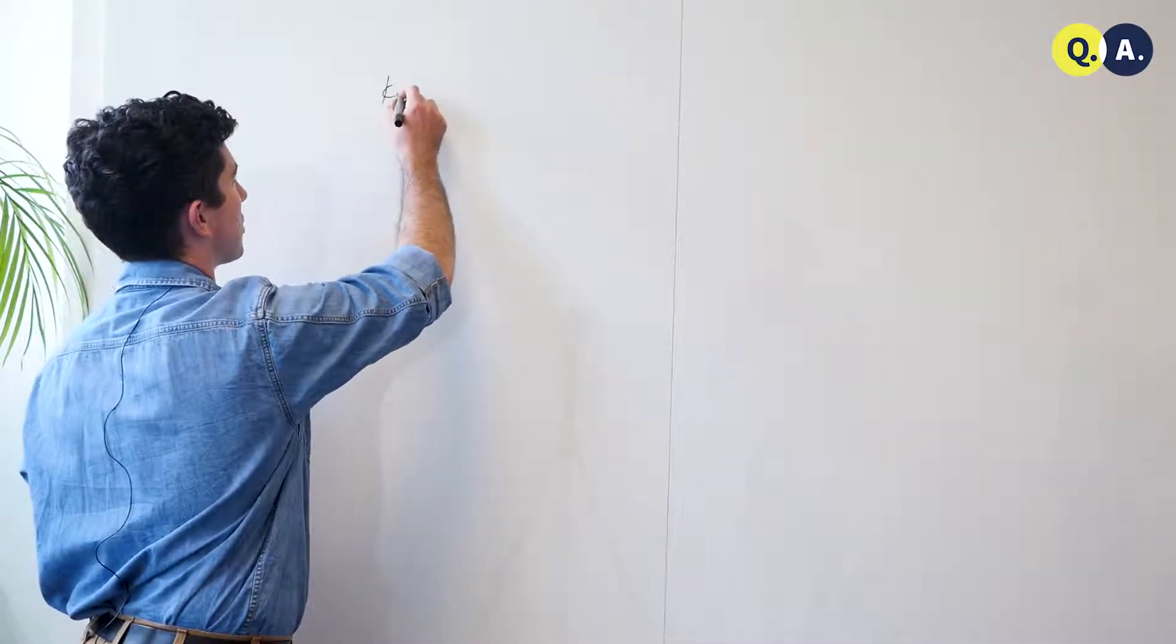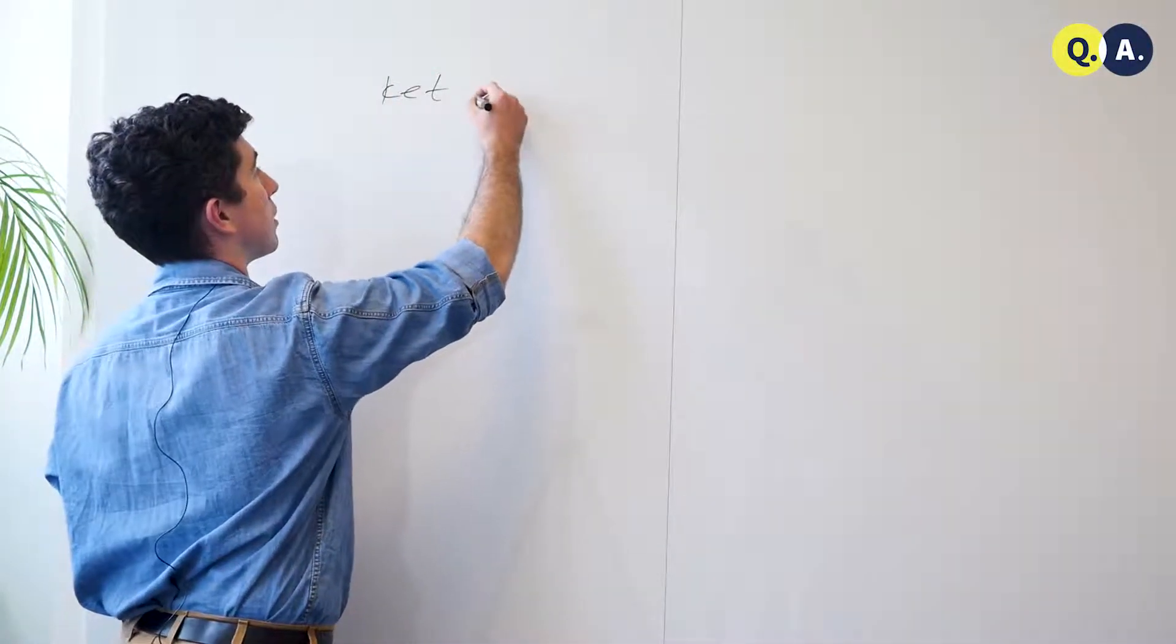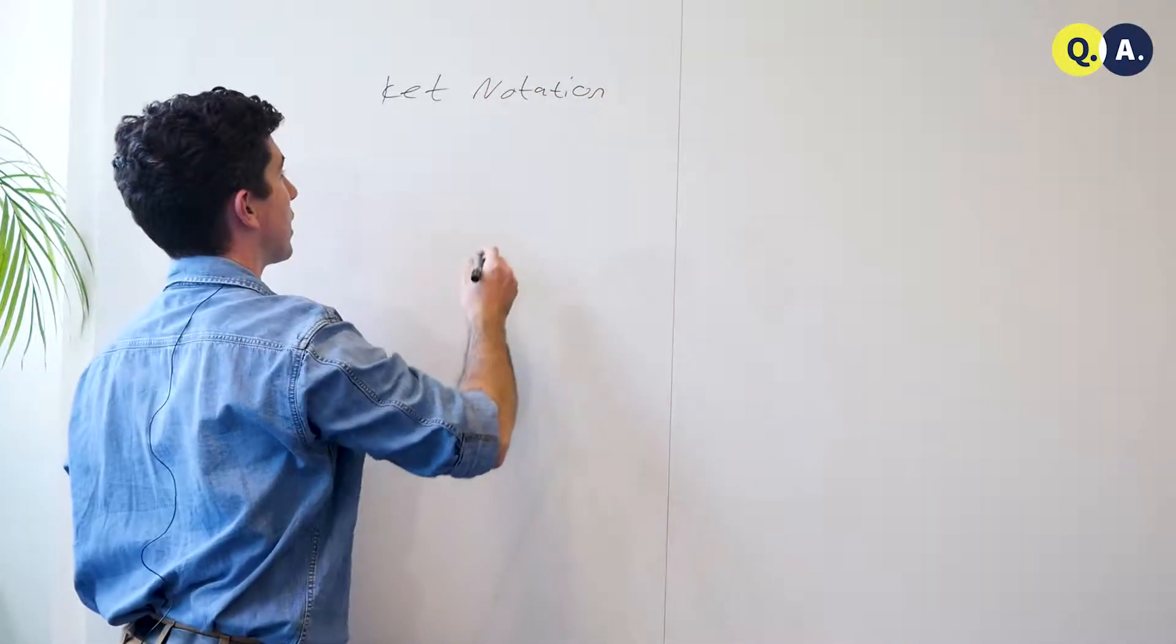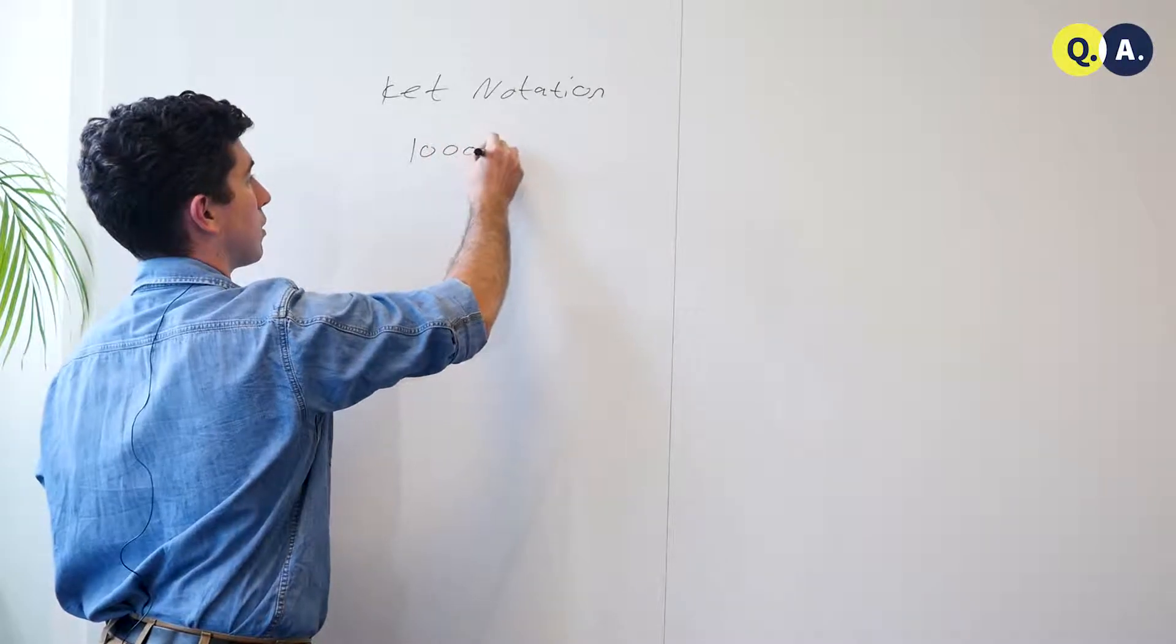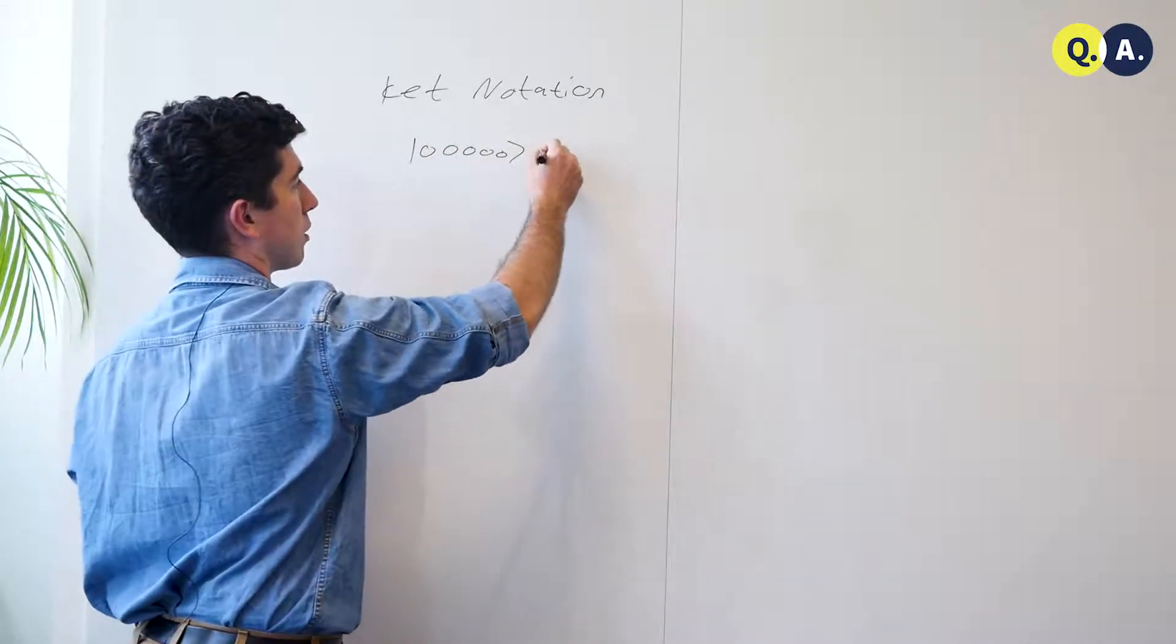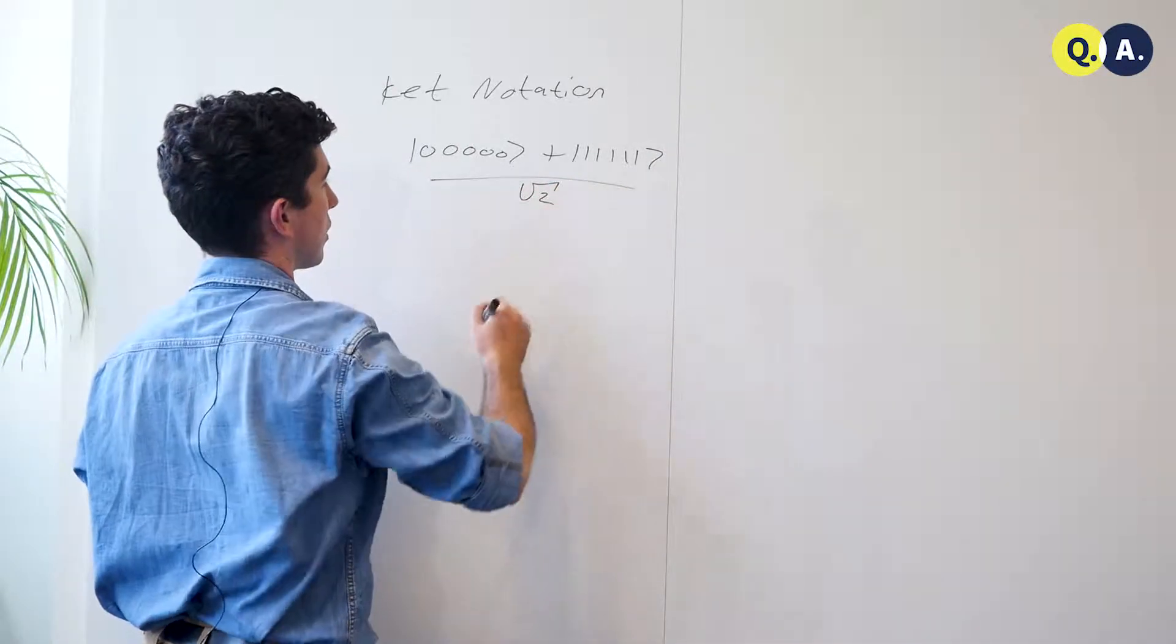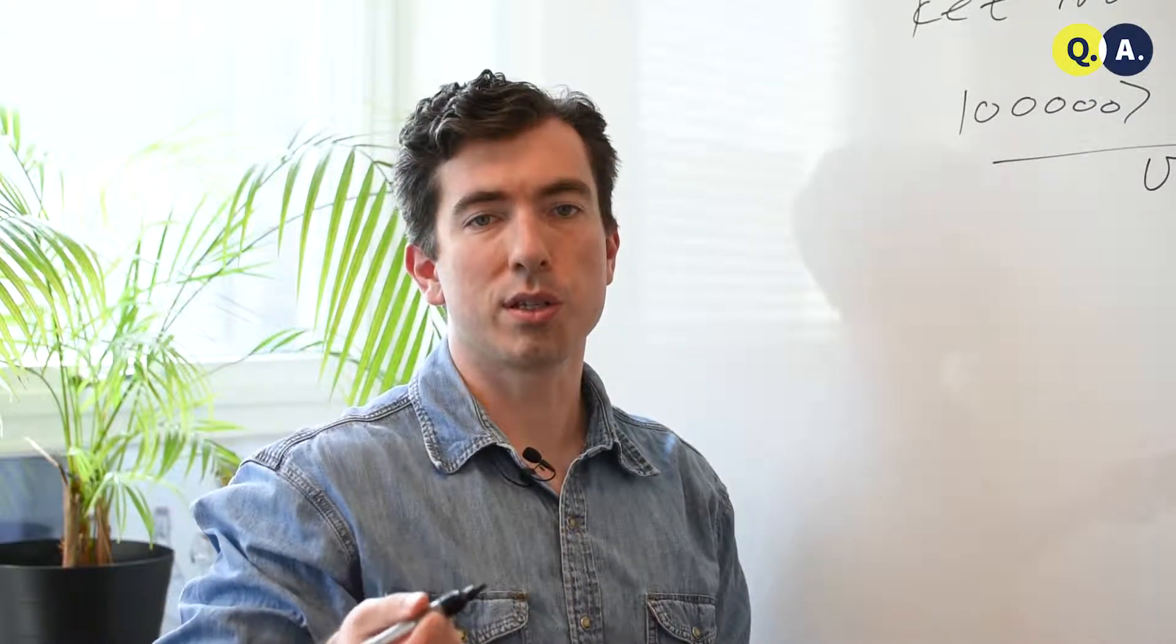First, let's take a look at some of the advantages of ket notation. It's very nice for sparse states. That is to say, states which don't have that many non-zero entries in some basis.